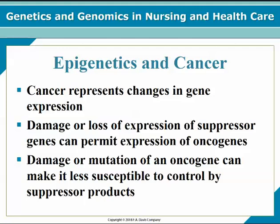Regarding epigenetics and cancer: cancer represents changes in gene expression, and damage or loss of expression of tumor suppressor genes can permit expression of oncogenes. Epigenetics has been shown to change the expression of suppressor genes. Damage or mutation of an oncogene can make it less susceptible to control by suppressor products. Interestingly, a tumor cell can live and divide in cell culture indefinitely, whereas normal cells typically die in culture. These mechanisms provide researchers a means to study cancer and test cancer drugs.